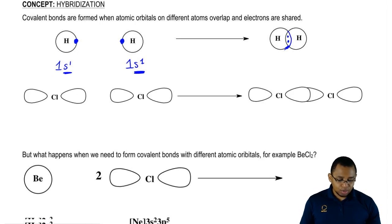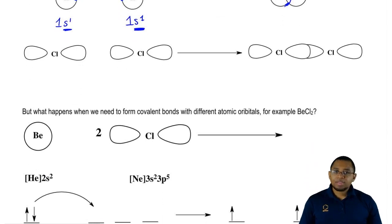If we take a look at two chlorines, they can also overlap their P orbitals because their electron configurations would be neon 3S2 3P5, neon 3S2 3P5.